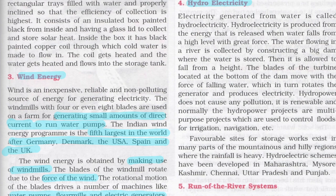Hydroelectricity is the energy generated from water. It is produced when water falls from a greater height with a greater force. Water flowing in a river is collected by constructing a dam where it is stored and then allowed to fall from a height. The turbine blades at the bottom of the dam start rotating when water falls on them, producing electricity. Hydropower does not cause any pollution and is renewable. Hydro power projects are typically multi-purpose projects used to control floods, for irrigation, navigation, etc.